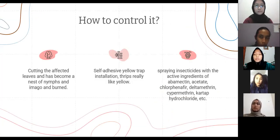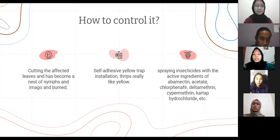To control thrips: cut the affected leaves that have become a nest of nymphs and imago, and prune them. Install soft adhesive yellow traps. Thrips are really attracted to light yellow. Spray insecticide with the active ingredient of abamectin acetate, etc.